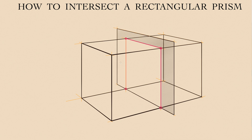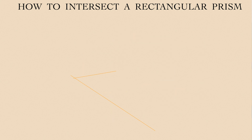I hope it was easy for you to follow this demonstration. In the previous example, the vertical plane was parallel to the prism's side. Let's examine if anything changes when a vertical plane is not parallel, but is at some oblique angle to the prism.